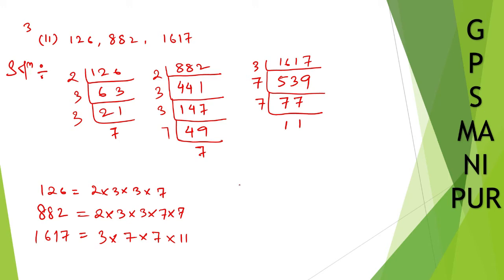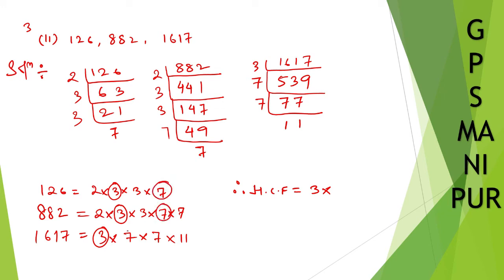Now we need to find the HCF. Take the factors common to all three numbers. The factor 2 is common only to 126 and 882, not all three. The factor 3 is common to all three, so take 3. The factor 7 is also common to all three, so take 7. No more common factors. HCF = 3 × 7 = 21.